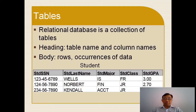Now let me go to tables. You know, a relational database is a collection of tables. In tables, you have a table name and column names. And the body of the table contains rows, or currency of data. You see here is an example of a student table.